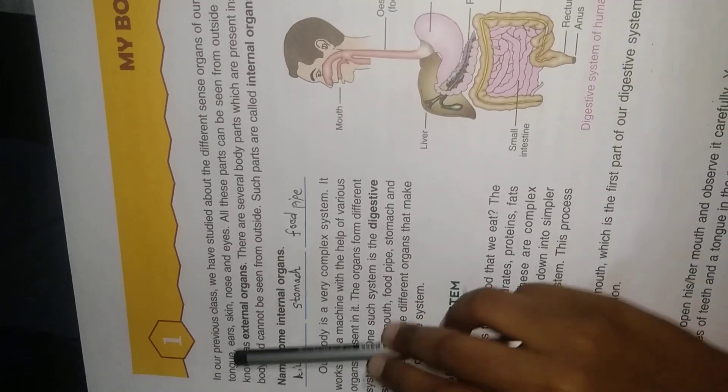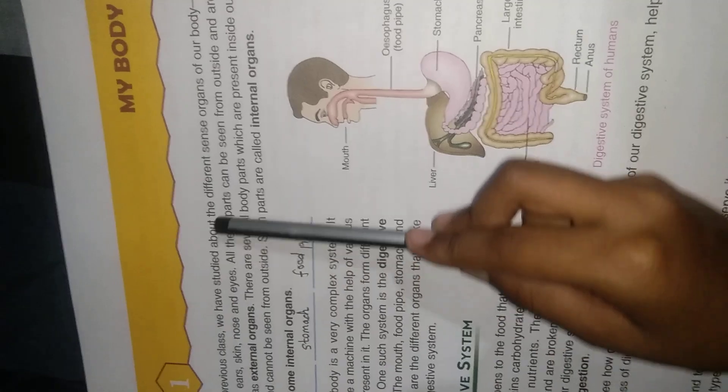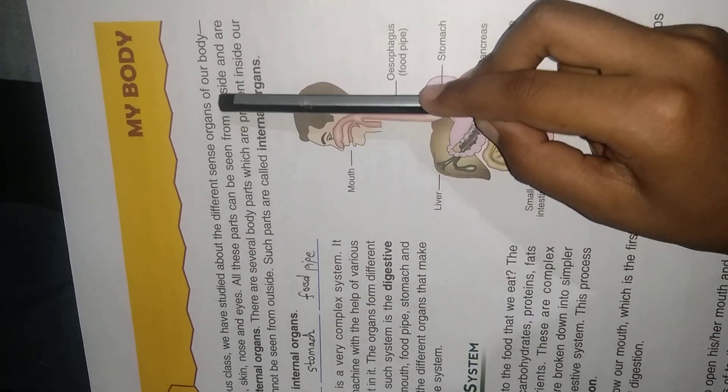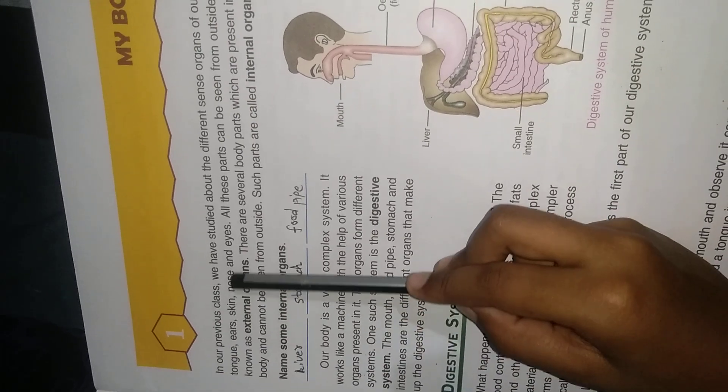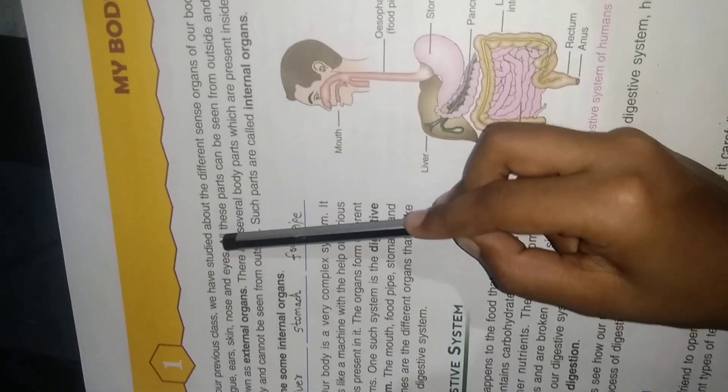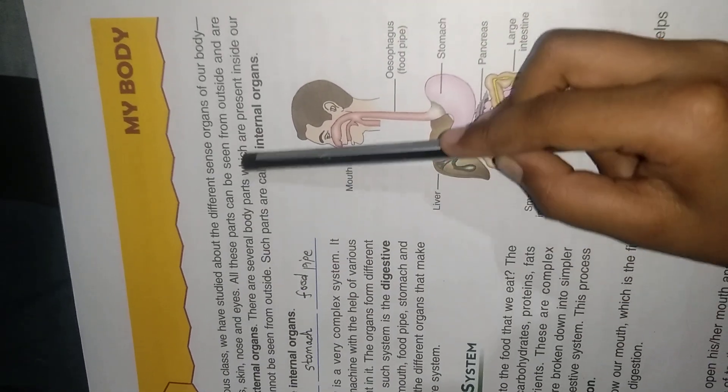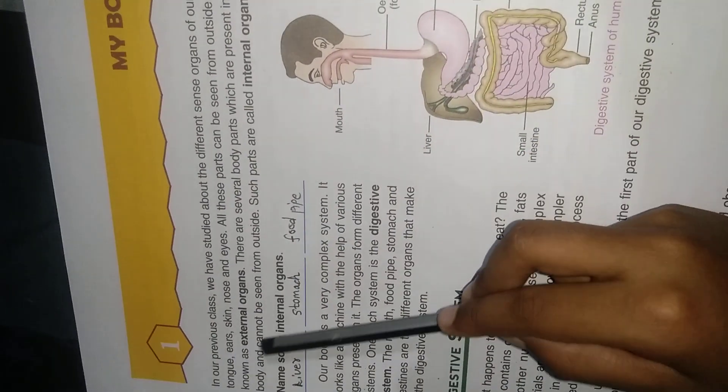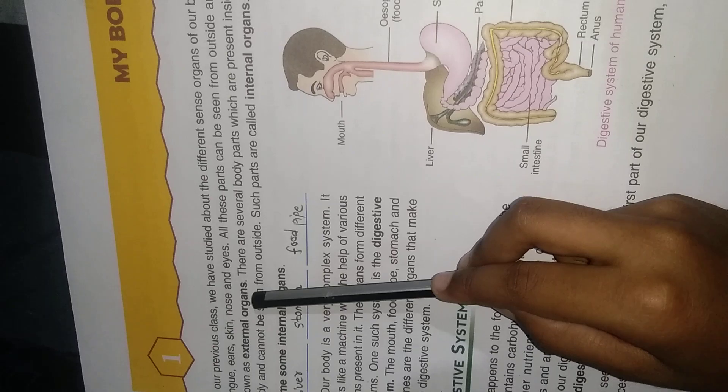In our previous class, we have studied about different sense organs of our body: tongue, ear, skin, nose, and eyes. All these parts can be seen from outside and are known as external organs.